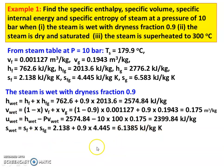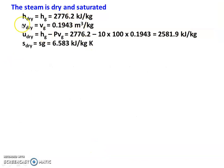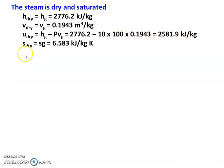For dry saturated steam, we write the values directly from the steam table. H_dry = HG = 2776.2 kJ/kg. V_dry = VG = 0.1943 m³/kg. U_dry = HG − P·VG = 2776.2 − (10×100)×0.1943 = 2581.9 kJ/kg. S_dry = SG = 6.583 kJ/kg·K.